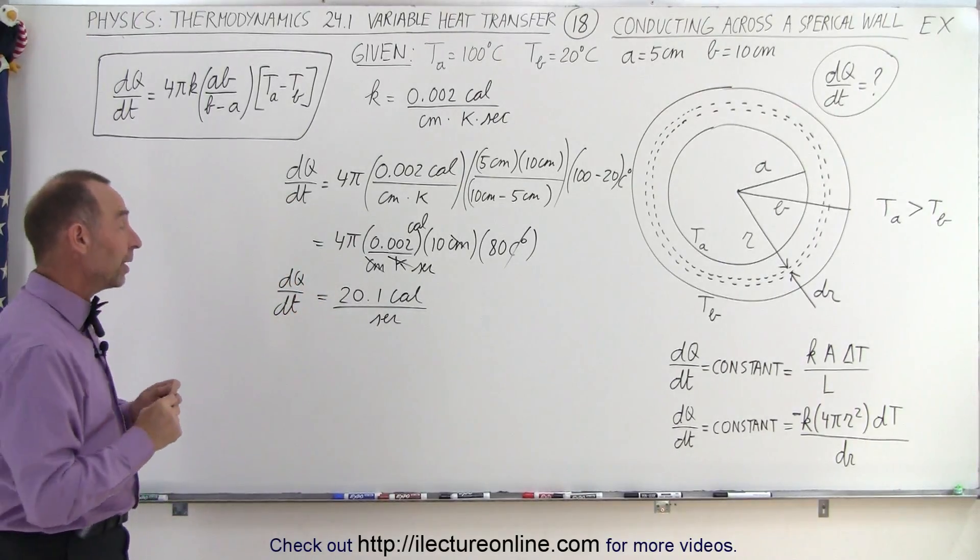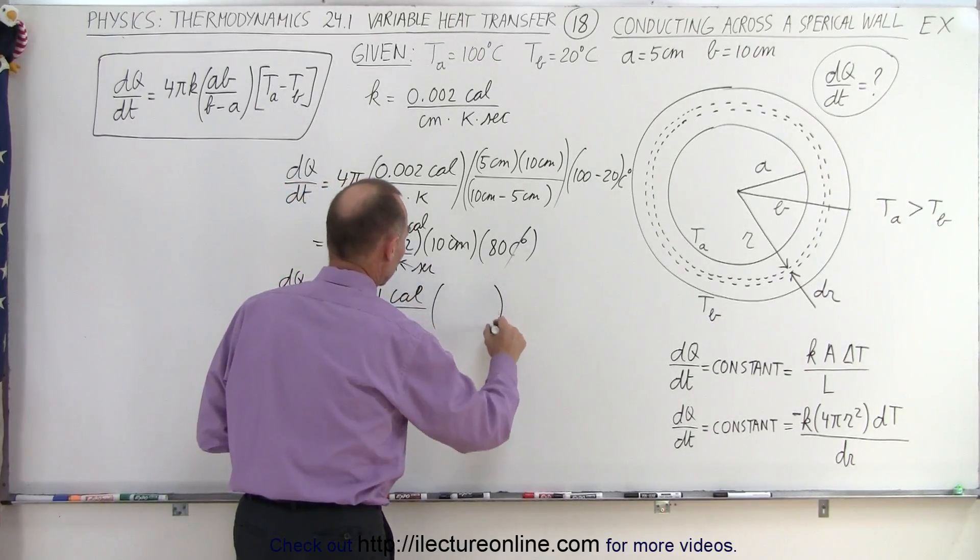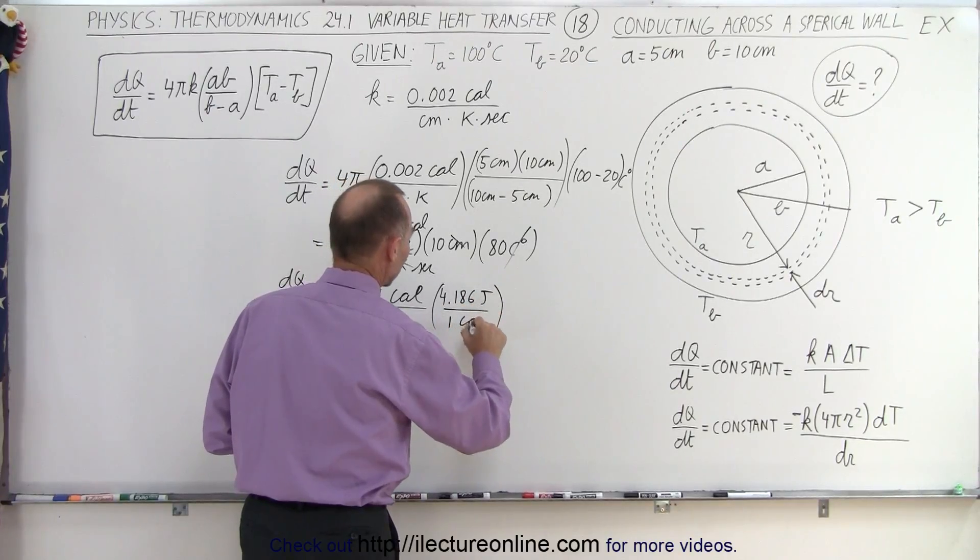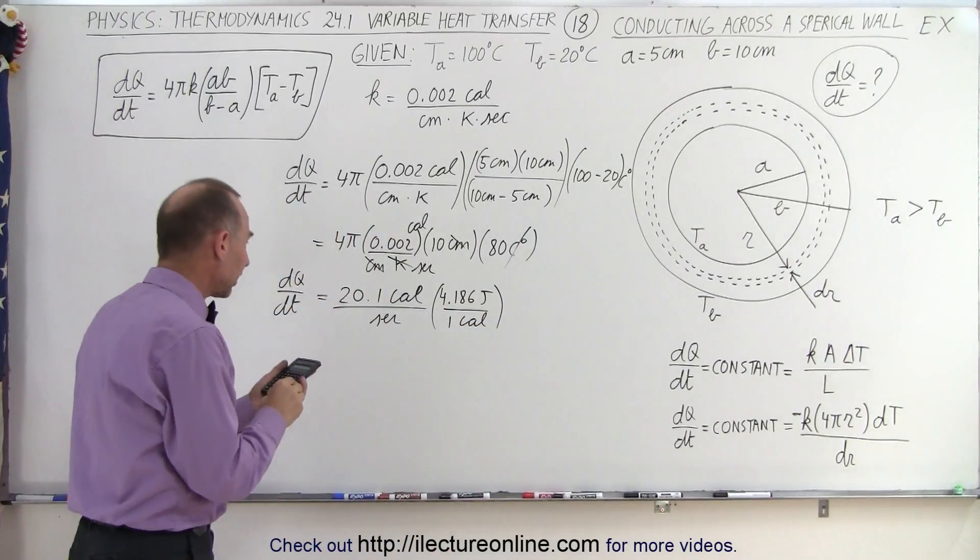Now if you don't like calories, we can convert that to joules. And the conversion factor between calories and joules, it is 4.186 joules per one calorie. So if you want that in joules per second or watts.